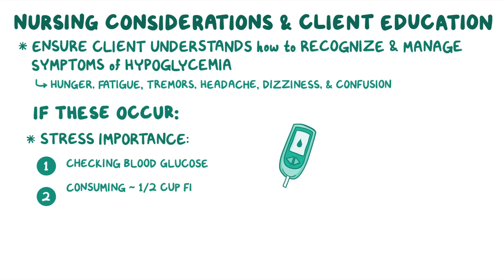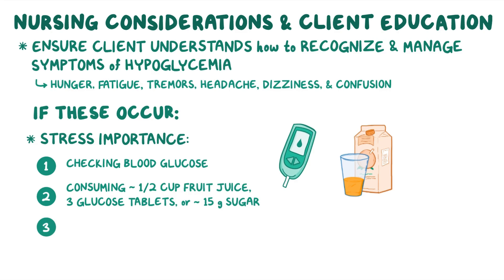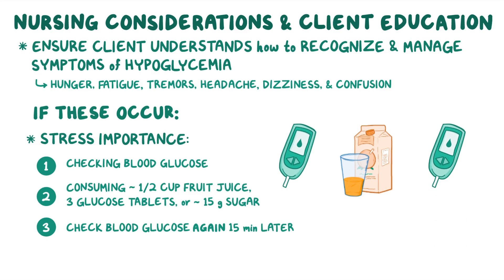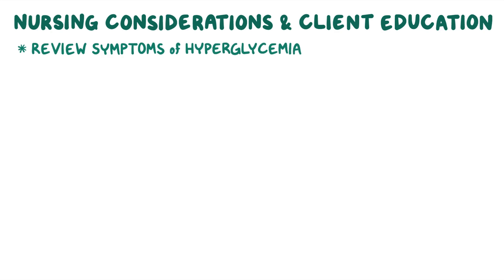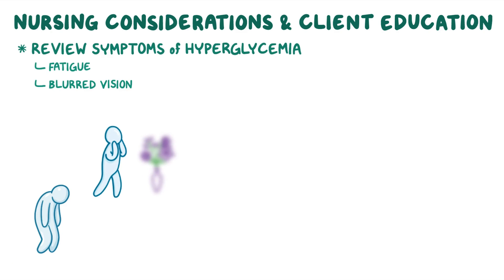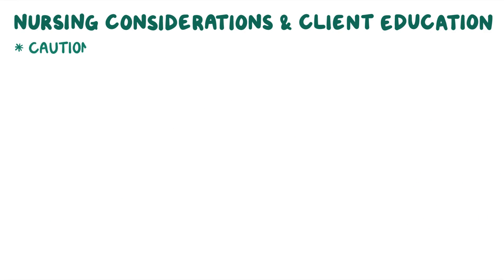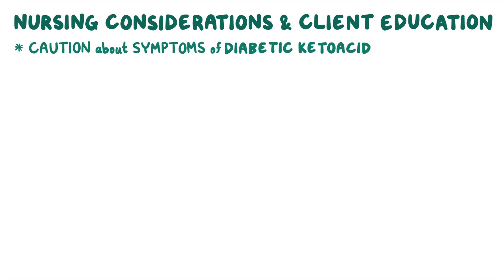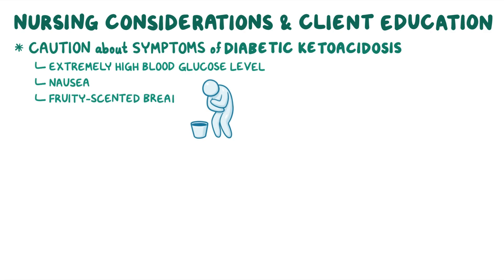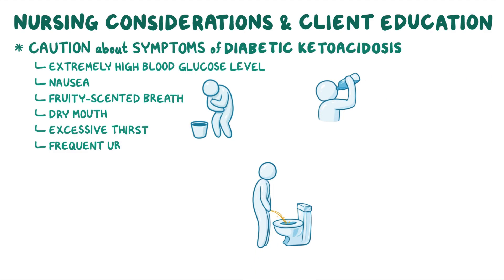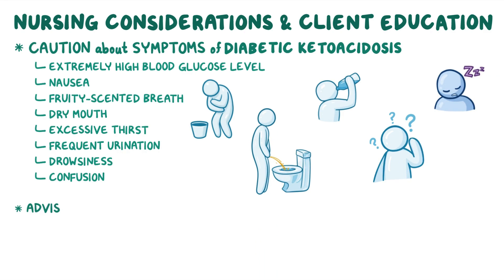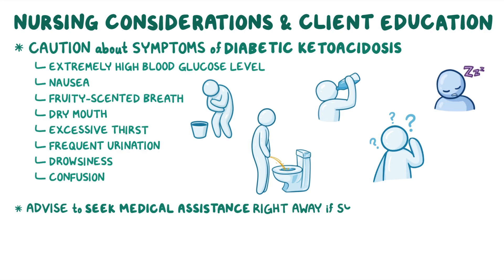If hypoglycemia symptoms occur, stress the importance of checking blood glucose, then consuming about half a cup of fruit juice, three glucose tablets, or approximately 15 grams of sugar, and rechecking blood glucose 15 minutes later. Also review symptoms of hyperglycemia including fatigue, blurred vision, and increased thirst, appetite, and urination. Caution them about diabetic ketoacidosis symptoms — extremely high blood glucose, nausea, fruity-scented breath, dry mouth, excessive thirst, frequent urination, drowsiness, or confusion — and advise seeking medical assistance right away if these develop.